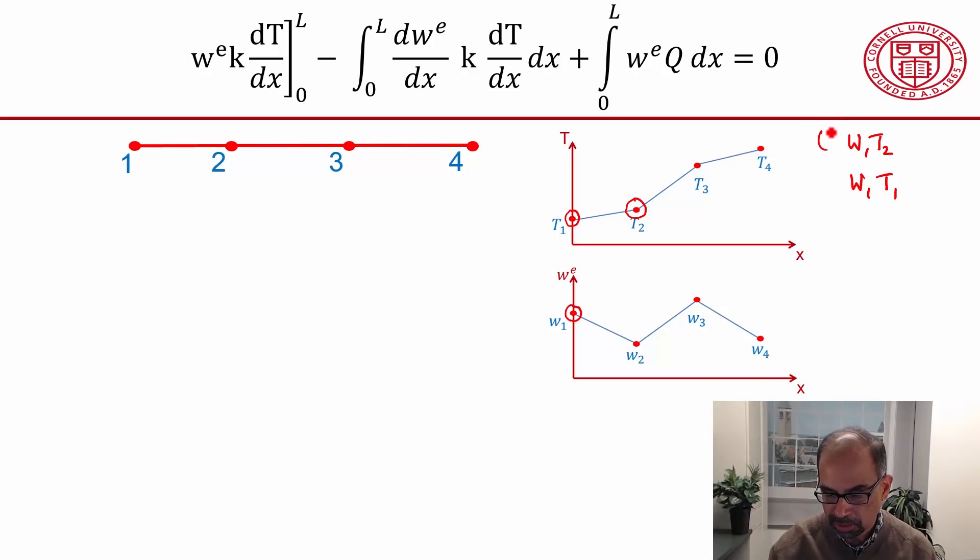You have some constant coefficients here which you have to work out. It's going to depend on k and it's going to depend on this element length. We won't worry about what that constant coefficient is. Interestingly, when you go and do the integration over the second element, you won't get any terms involving w1.